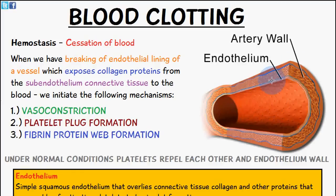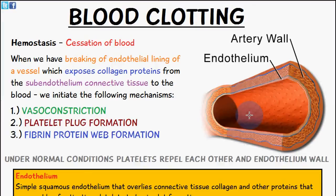I've included an image here showing a typical artery. You can see the artery wall and the endothelium. When we have breaking of the endothelial lining of a vessel, this exposes collagen proteins from the sub-endothelium connective tissue to the blood. When this happens, we initiate the following mechanisms: vasoconstriction, platelet plug formation, and fibrin protein web formation.